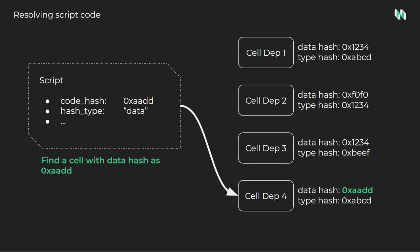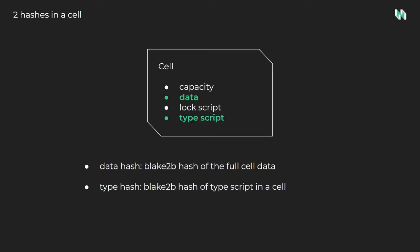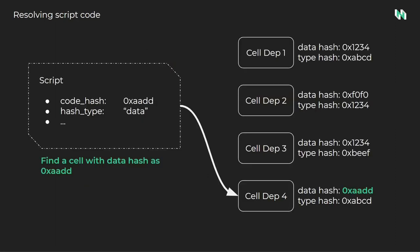Next, we'll cover how a script resolves dependencies during transaction execution. The code hash value is used to match against a cell dependency, and the hash type indicates what type of value should be used to match. Every cell contains a data hash — a Blake2b hash of the cell's data — and a type hash, which is a Blake2b hash of the type script's structure in raw bytes. When the hash type is data, the script matches a cell dependency using the data hash. For example, if the script's code hash is 'aadd' and hash type is data, it will match a cell DEP with a data hash of 'aadd', creating a successful match. This matching process is identical between lock scripts and type scripts.